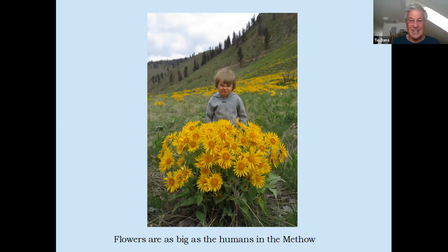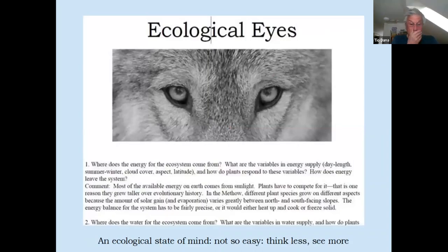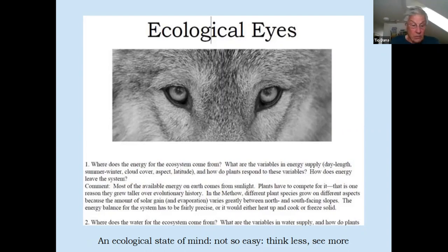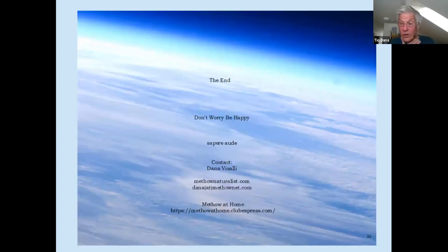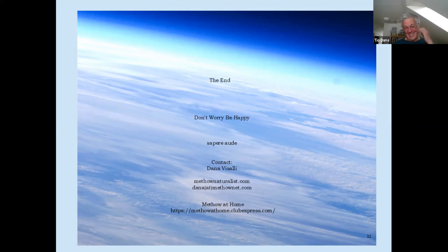An ecological state of mind is the direction we want to move. I can send you pages from the Methow Naturalist on this. The mind can be a mischievous little creature, constantly creating an imaginary world — but we could be observing the natural world, increasing the power of our ecological eyes, and creating an increasingly sustainable society. We live in a land that still has ecological integrity and we're doing our best to protect it. Don't worry, be happy — which means think for yourself.